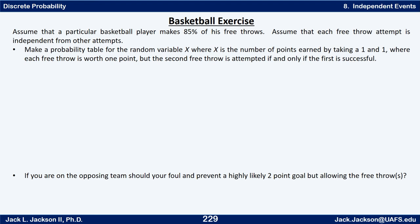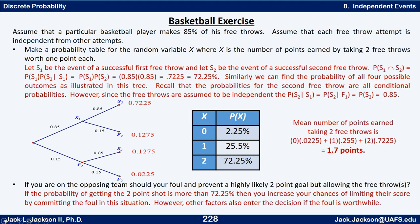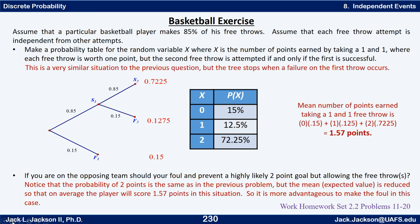Should the defensive team foul in this case? In the one-and-one tree, if he makes the first shot it looks just like before, but if he misses the first basket it stops — no second shot — so that 0.15 is the probability for that entire path. The probability of getting two points is still 72.25%, but the probability of zero points is now 15% and of one point is 12.75%. The expected value is now 1.57 points, compared to 1.7 before.